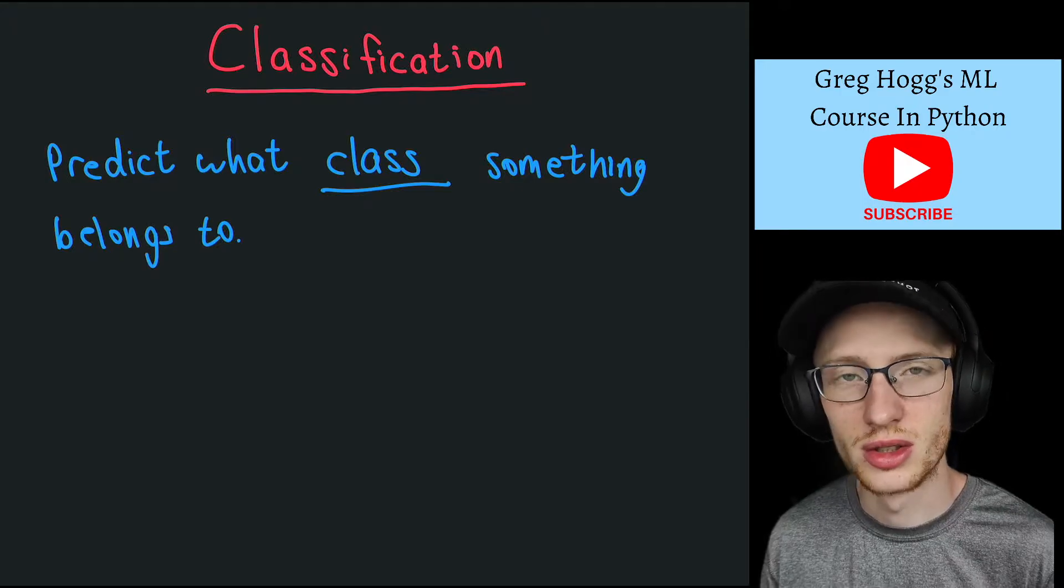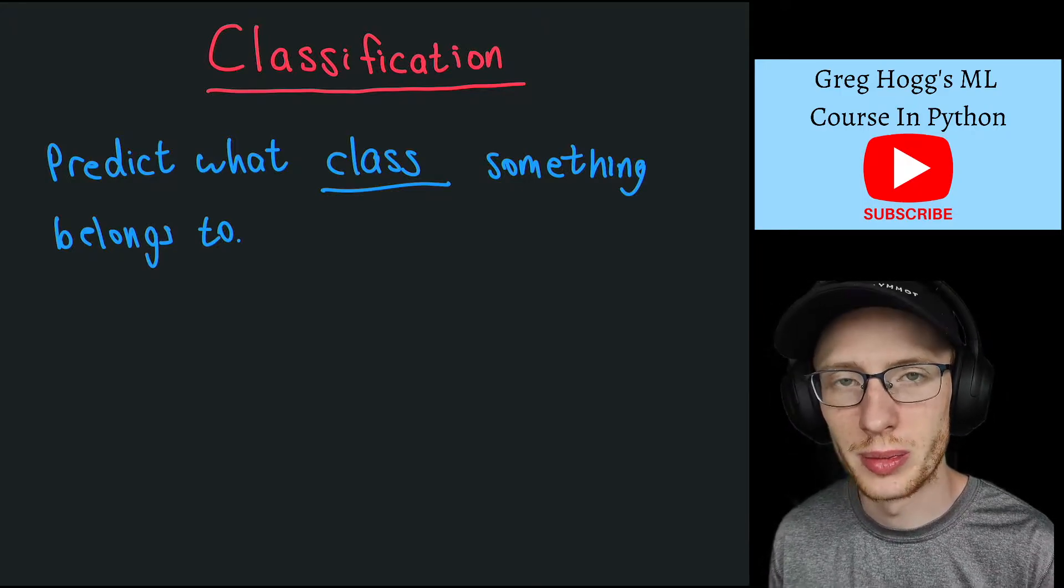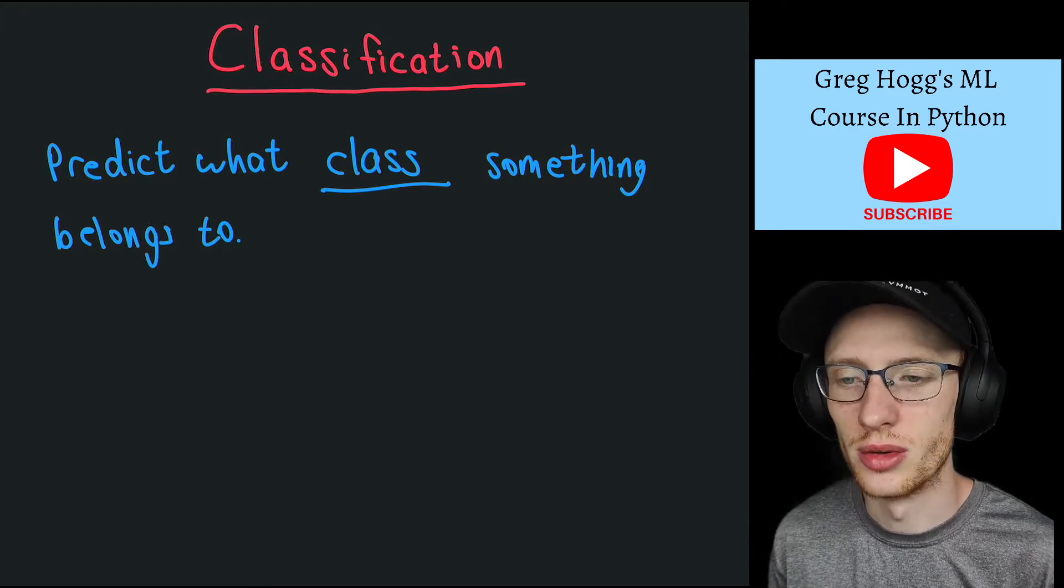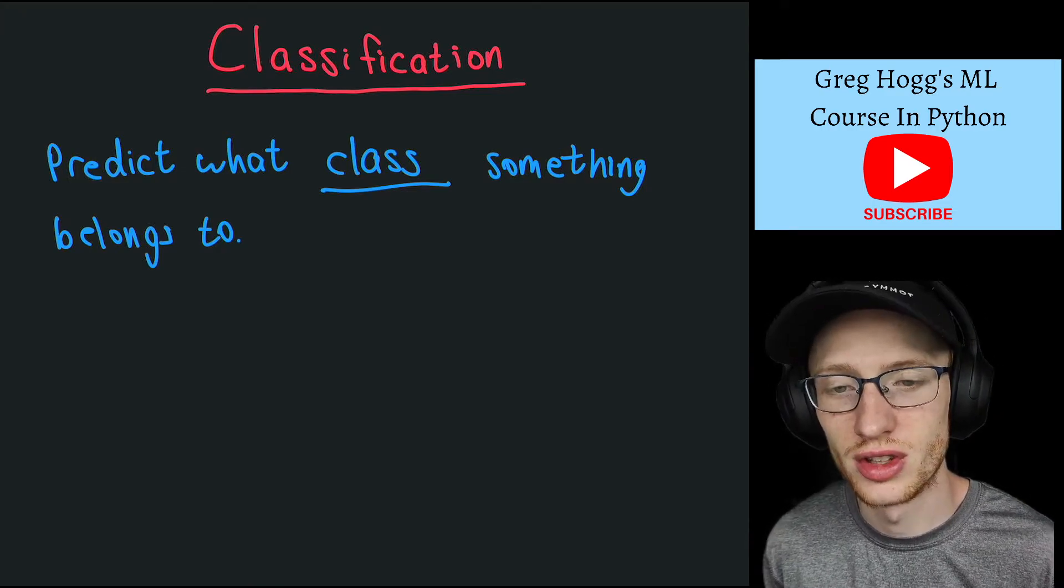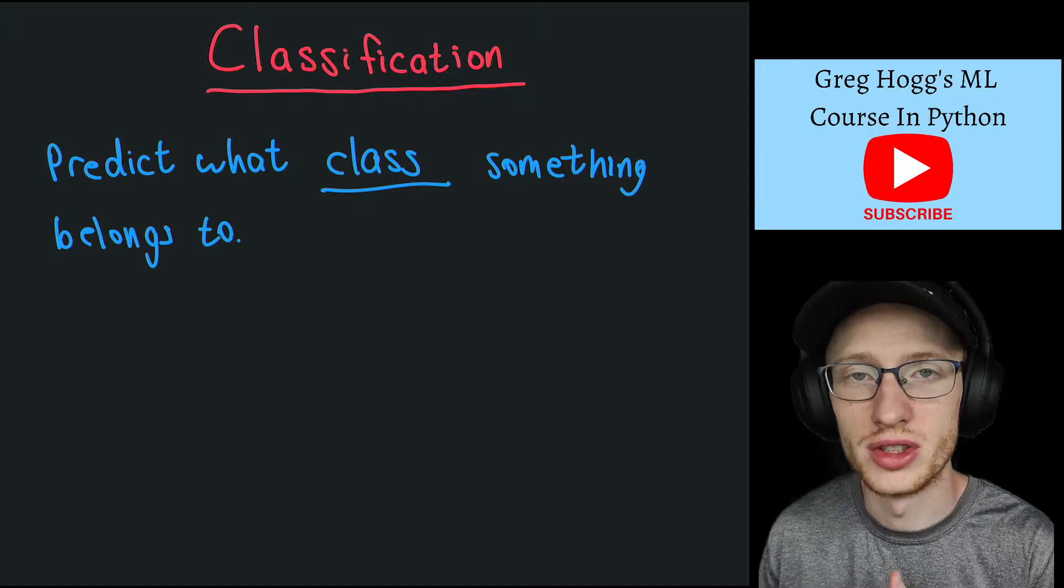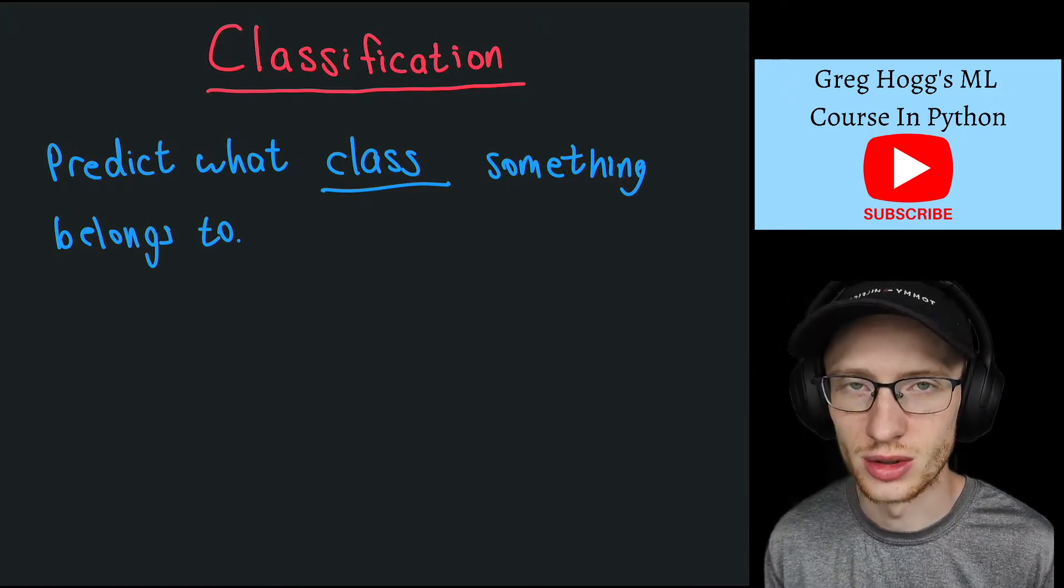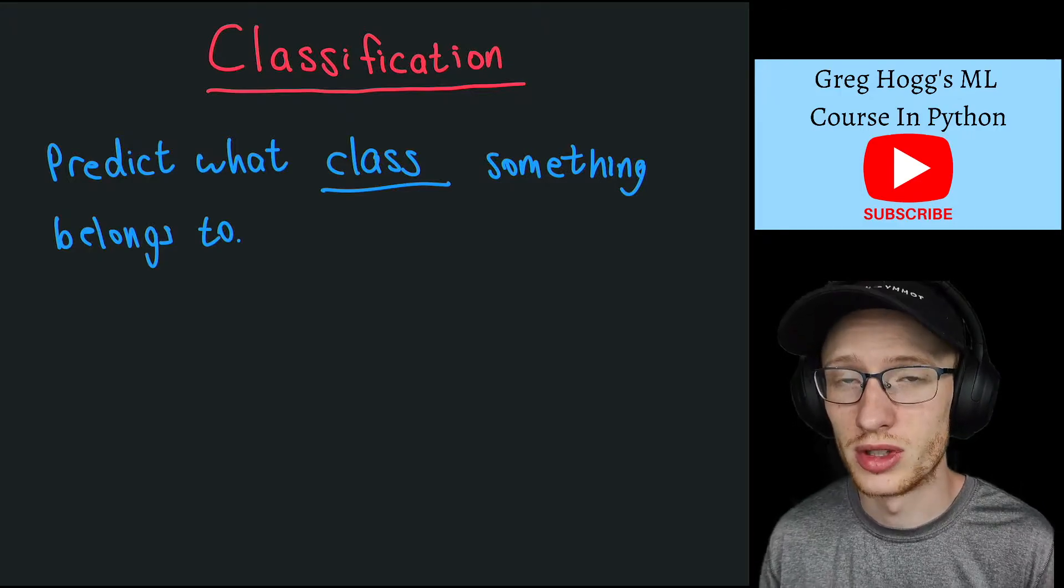How many classes are there? By class I just mean what type of thing it is. Maybe we're talking about cat versus dog, so we have two possible classes. We have some input x. Does x belong to cat or dog?